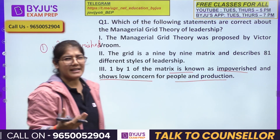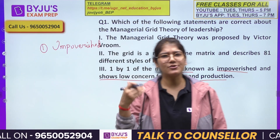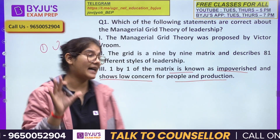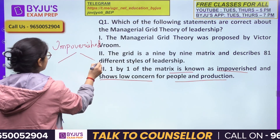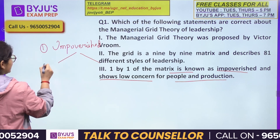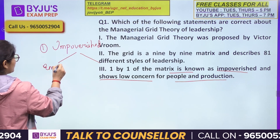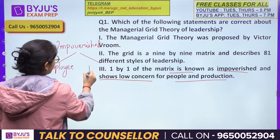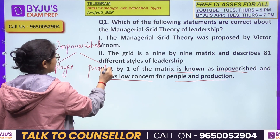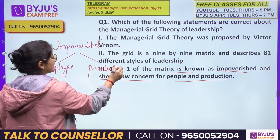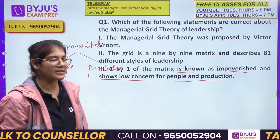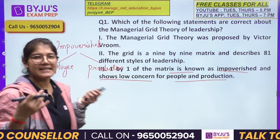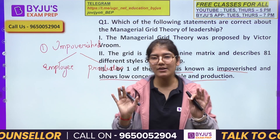In the Managerial Grid model, the impoverished style is where the manager or superior is not concerned about employees — concern for employees is zero — and concern for production, which is the result you give to the organization, is also zero. That is the impoverished style.